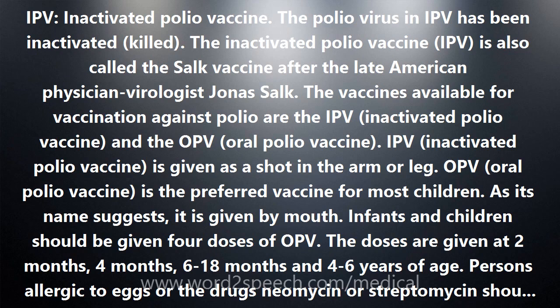Persons allergic to eggs or the drugs neomycin or streptomycin should receive OPV, not the injectable IPV. Conversely, IPV should be given if the vaccine recipient is on long-term steroid cortisone therapy, has cancer, or is on chemotherapy, or if a household member has AIDS or there is an unimmunized adult in the house.